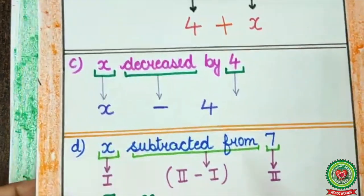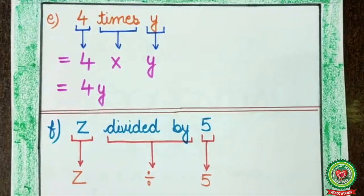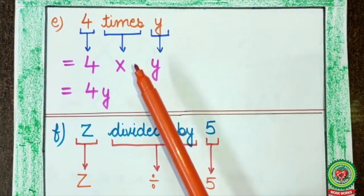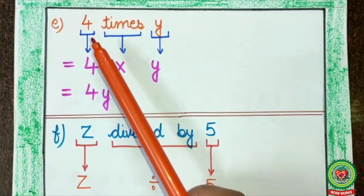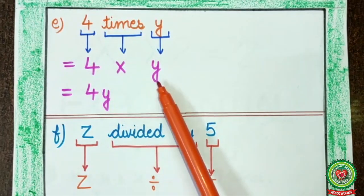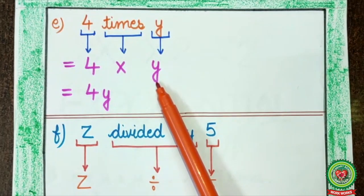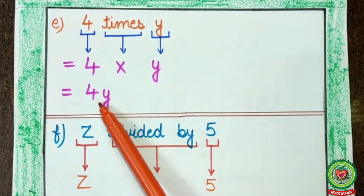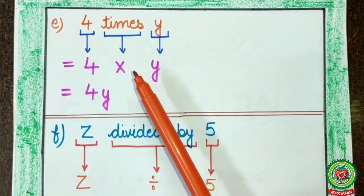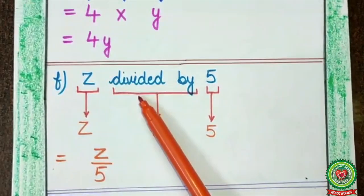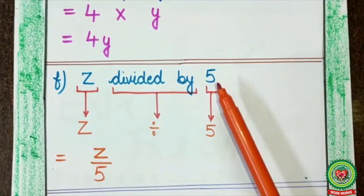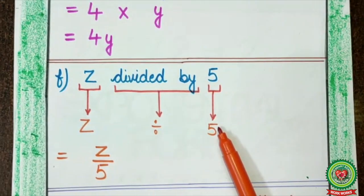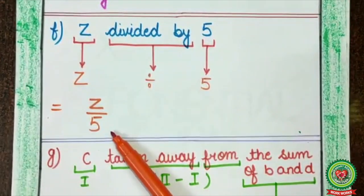Now let's see the next example. Here, 4 times Y. Times indicates the sign of multiply. So, here it comes 4 multiply Y. You can also write it as a single term: 4Y, because no sign between them indicates multiplication. Next, Z divided by 5. Here Z divided by 5. You can also write it as Z upon 5.